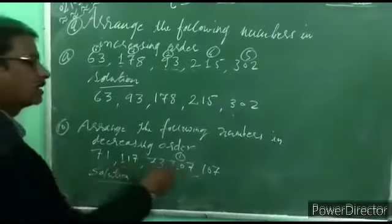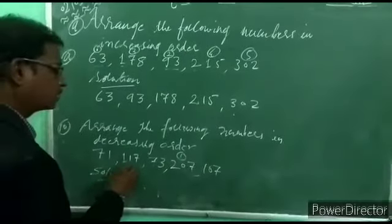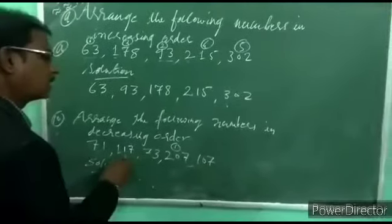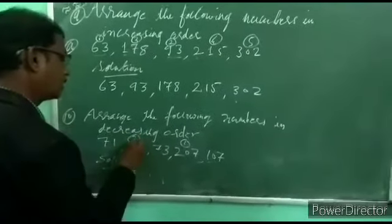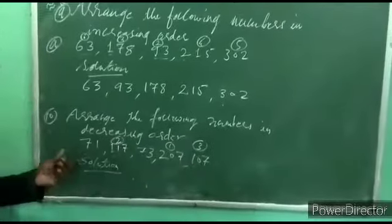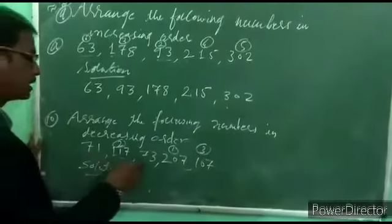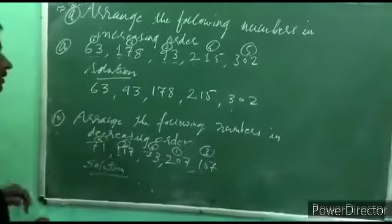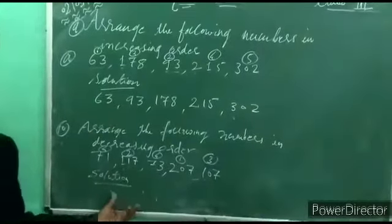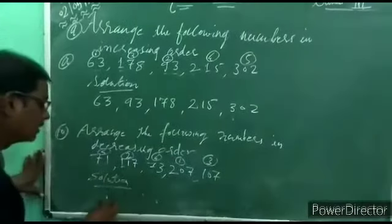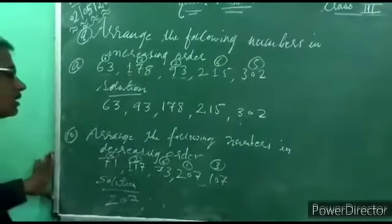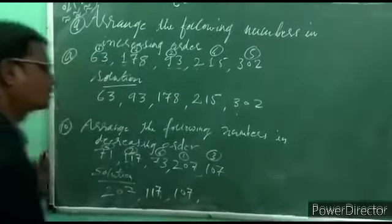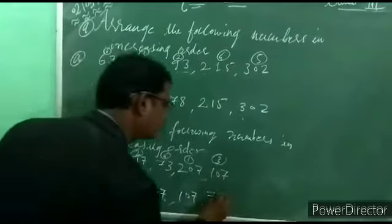From 170 and 107, the hundreds place is both 1, so compare the tens place: here 7, and here 0. 7 is bigger than 0, so 170 is second and 107 is third. Now from the 2-digit numbers 71 and 73, which is greater? 73 is greater, so 73 is fourth and 71 is last. So the answer in decreasing order is: 202, 170, 107, 73, 71.